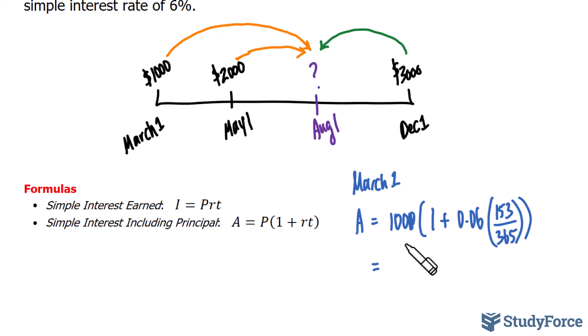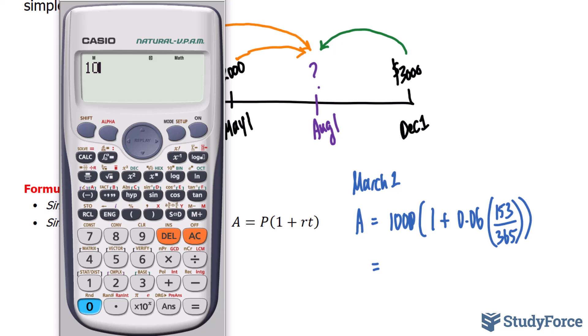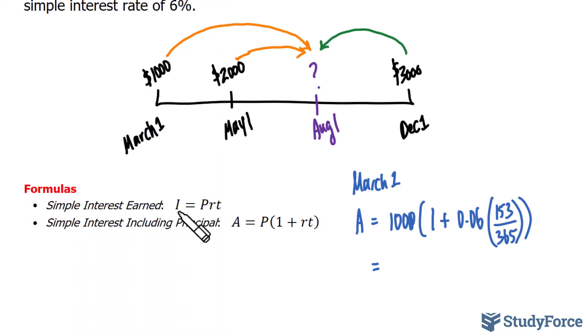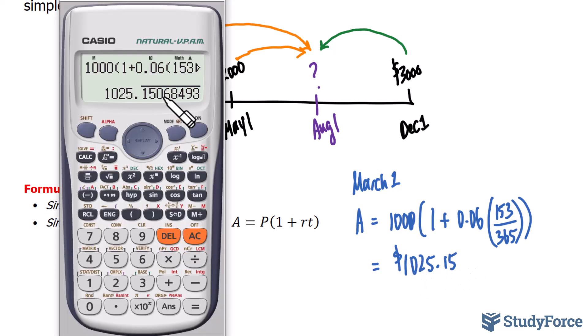If we calculate this, we'll find out how much $1,000 matures to by August 1st. So, 1,000 × (1 + 0.06 × 153/365), and we end up with a value of 1,025.15. Now, to ensure that these calculations are done properly, it is appropriate to write down up to four decimal places and round at the very end of the question.